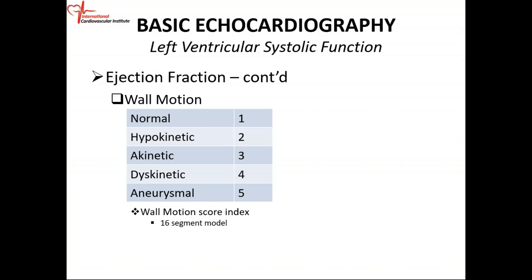Another very important concept is when we look at the walls, we can determine whether it's normal or abnormal. A normal heart wall thickens when it contracts and thins when it's in diastole. The heart wall can be abnormal and there are different levels to the abnormality. We can say it's hypokinetic — it does not thicken adequately when it contracts. We call that hypokinesis. Or it may not thicken at all when it contracts — we call that akinesis or it's akinetic. Or it can be dyskinetic, meaning it moves in the opposite direction.